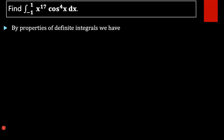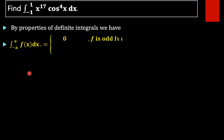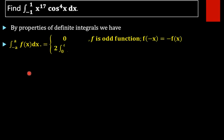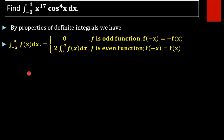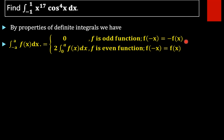We utilize the property: integral from minus a to a of f(x) dx equals 0 if f is an odd function, and equals 2 times the integral from 0 to a of f(x) dx if f is an even function. If we put minus x instead of x and get negative of the function, it is odd; if we get the function itself, it is even.